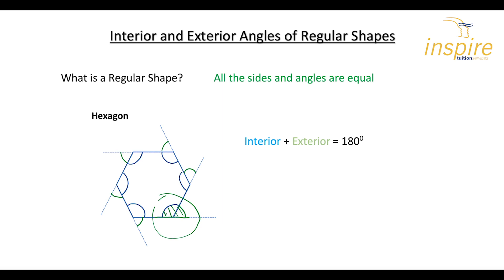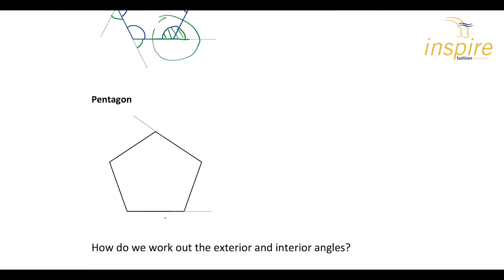Moving on, if we look at a pentagon, this here would be your exterior angle. There's another exterior angle here. Obviously there'll be another one — if you extend that line, there'd be one here, and so on. Our interior angles are here, there, and there. So we'll have five exterior angles and five interior angles. That explains what interior and exterior angles are.